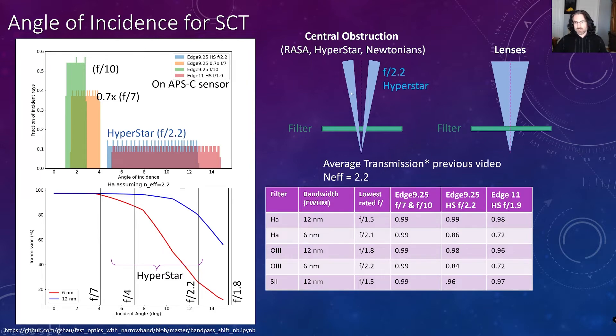What's different with lenses? We don't have this central obstruction, so we actually have a little bit more of a continuous sampling of all of those angles, and that's going to change the apparent transmission of the total filter.